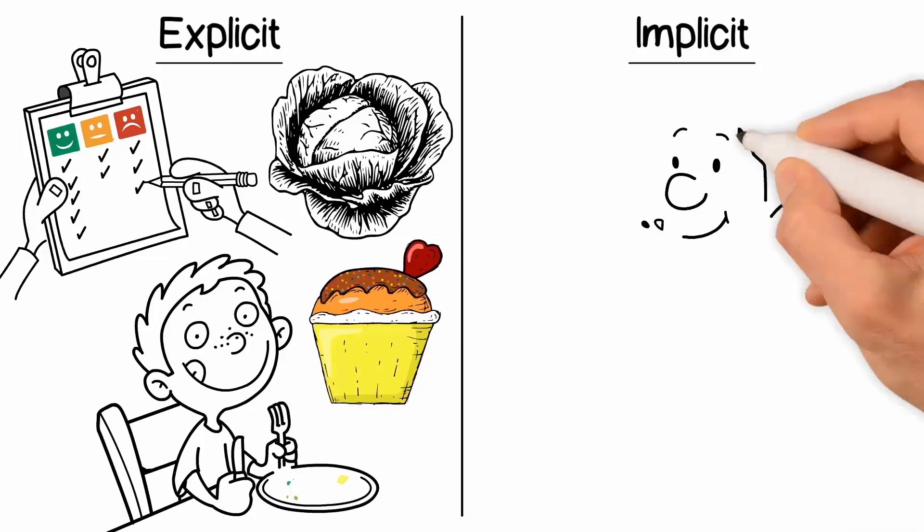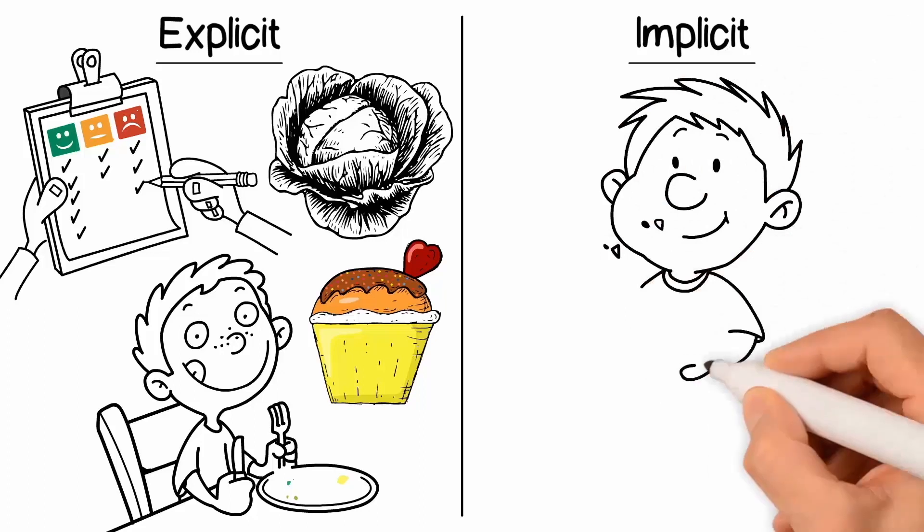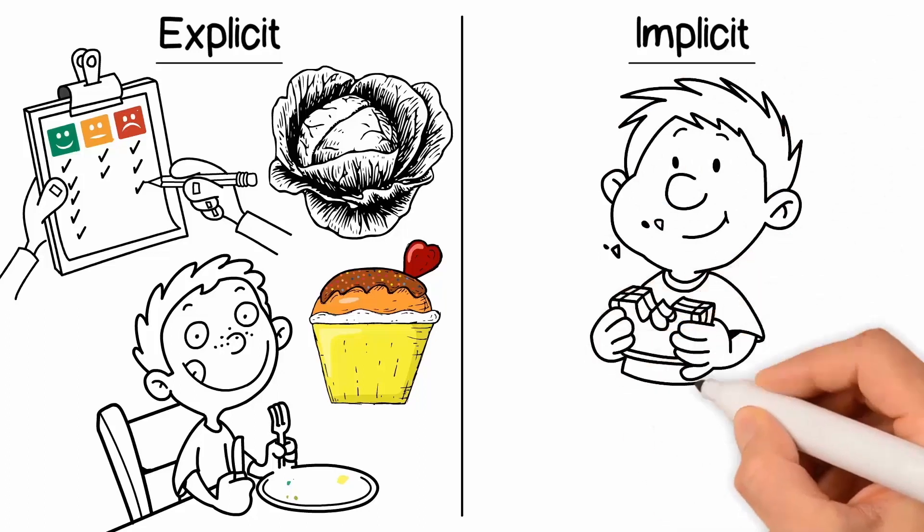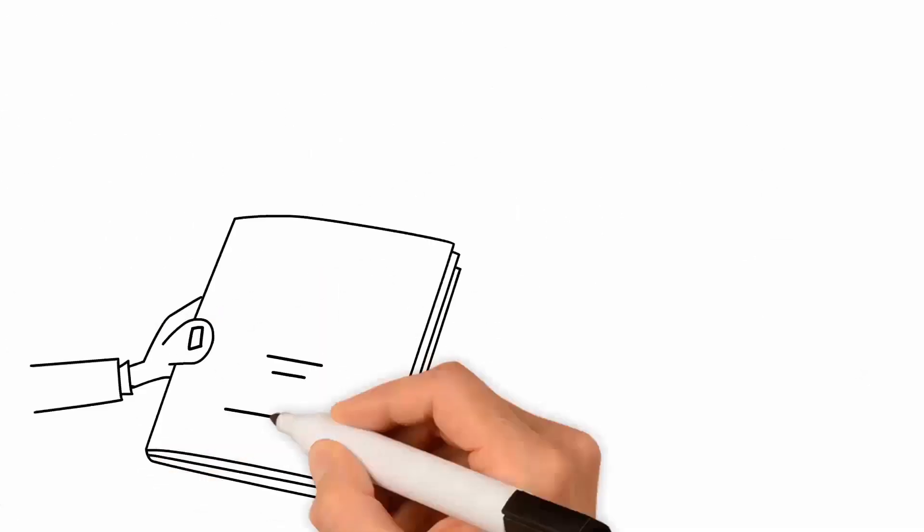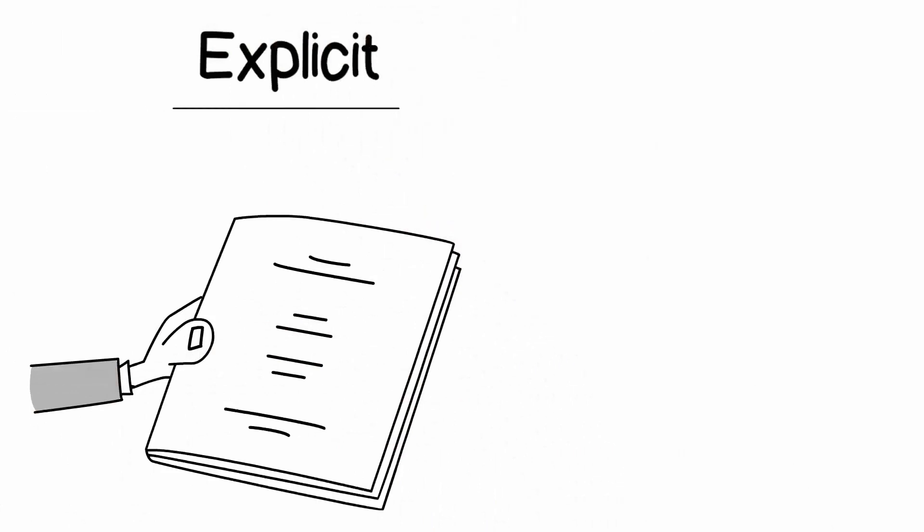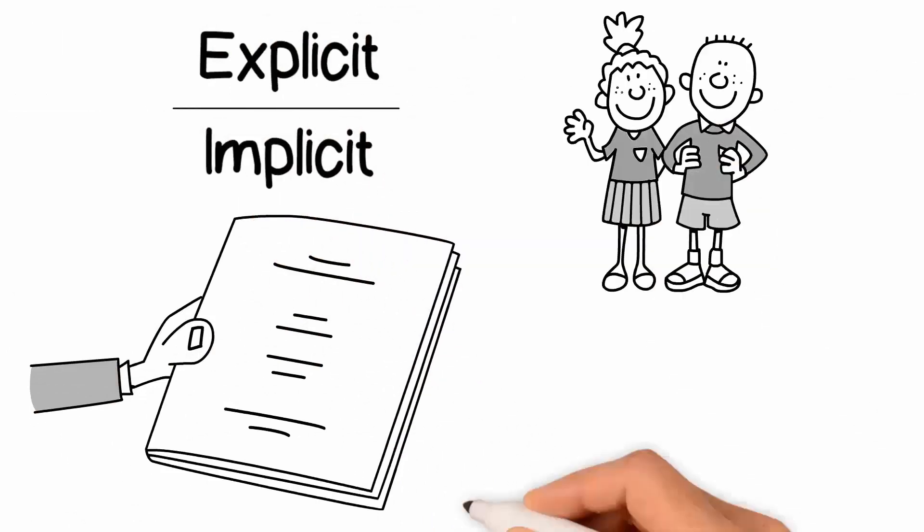At the same time, children can hold implicit attitudes about foods, which reflects more automatic emotion or sensory responses to the foods. To date, little research has examined both types of attitudes in the same sample of children.